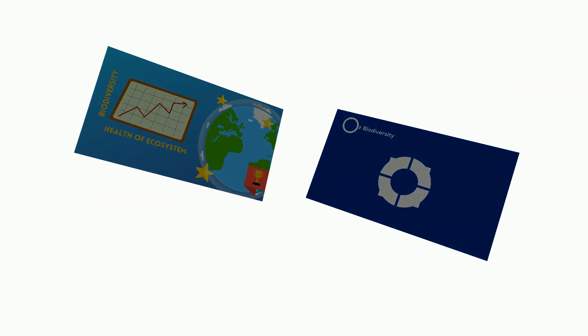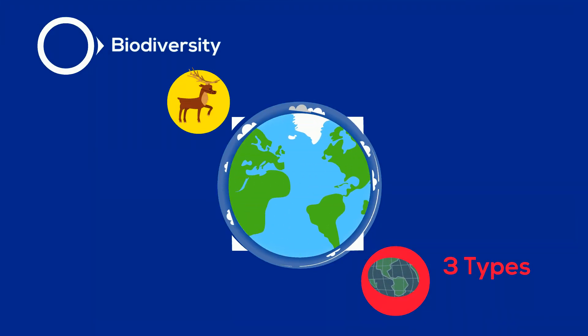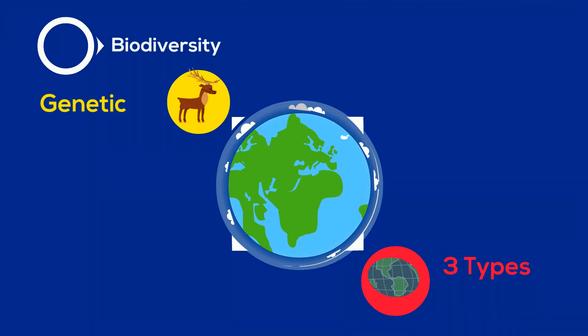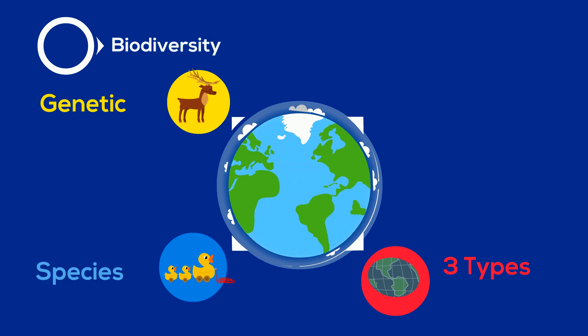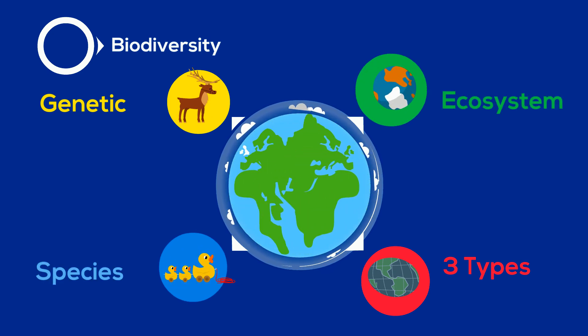Biodiversity can be broken down into three types: genetic diversity, species diversity, and ecosystem diversity.